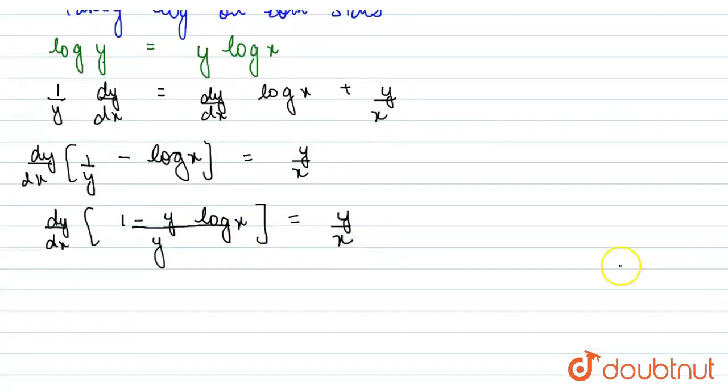So our answer becomes dy by dx equals y square upon x into (1 minus y log x).